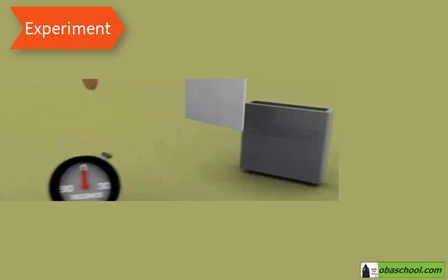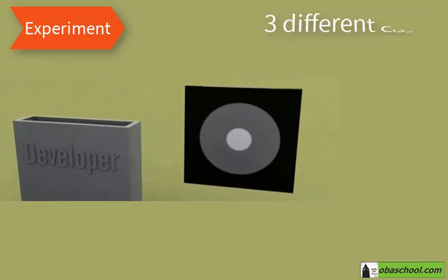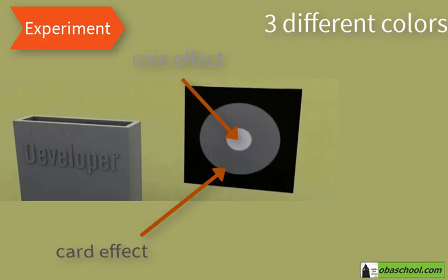Then, the photographic film is checked. It's noticed that there are three different types: the coin has a gray color, the card has a more dense color, and at the edges it's black.